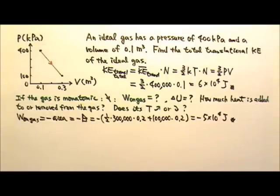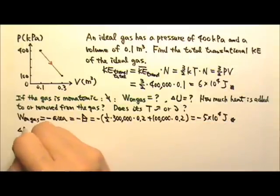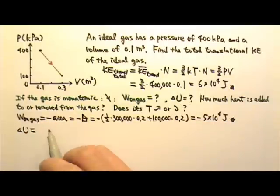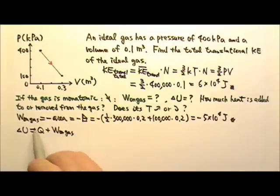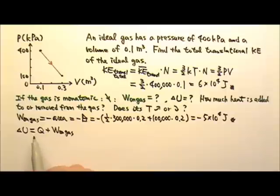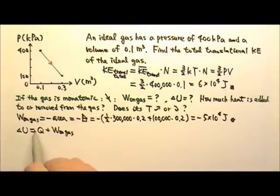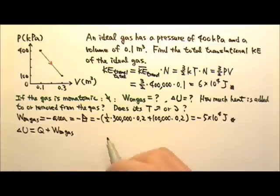This gives us the work done on the gas of negative 5×10⁴ joules. Then we want to find ΔU. We know ΔU equals Q plus W (work done on the gas), but we don't have Q. So we'll find ΔU using a different method, and then find Q using ΔU and W.